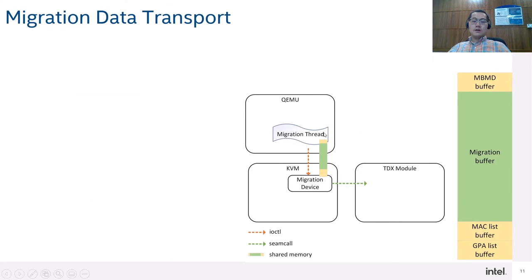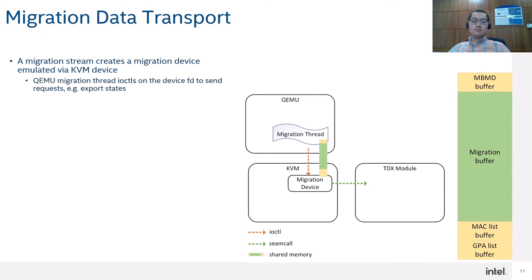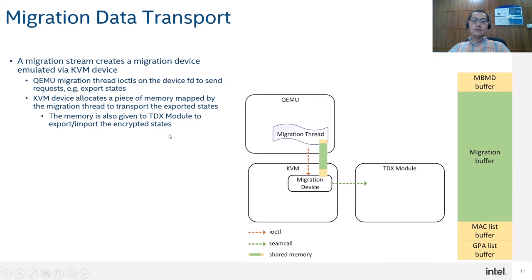There are many states that need to be transferred. Each migration stream creates a migration device emulated using the KVM device. The migration thread does I/O controls on the device FD to send requests to the migration device in KVM — for example, asking it to export memory states. The KVM device allocates a piece of memory to be mapped by the migration thread. Using shared memory is for performance purposes — we don't need to copy data between user space and KVM.